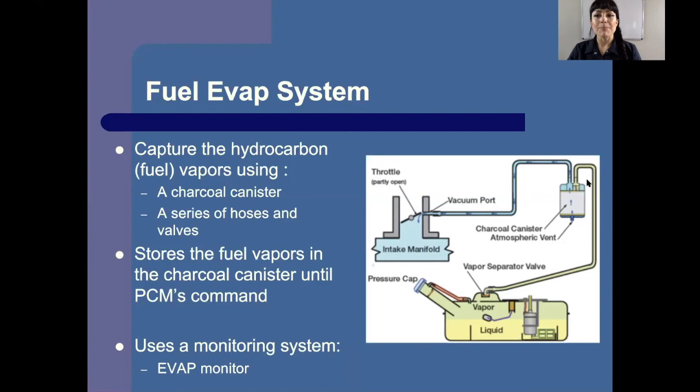The charcoal canister has a purge valve controlled by the PCM. There is a monitor for this system — for all post-combustion controls, there's going to be a monitor, and EVAP has its own monitor. That is emission controls in a nutshell. Let me know if you guys have any questions at all — post in the comments and I will get back to you as soon as possible. Thank you.